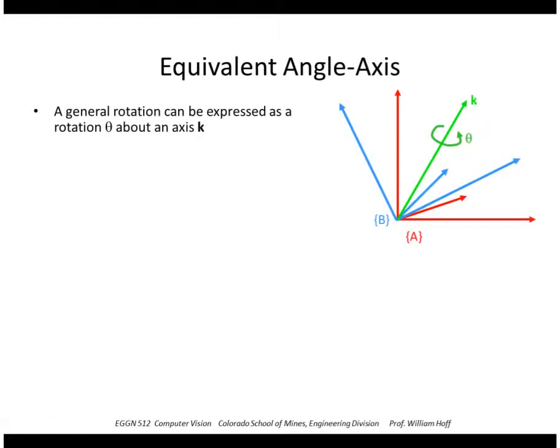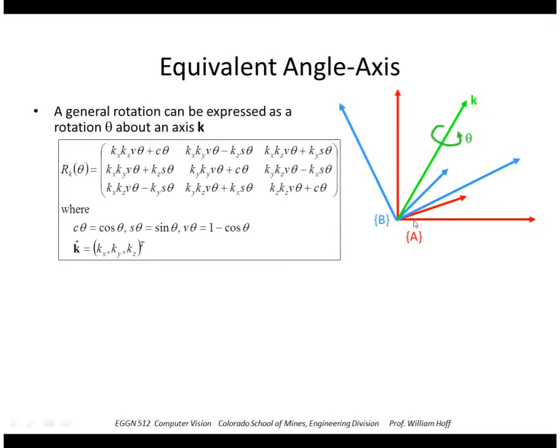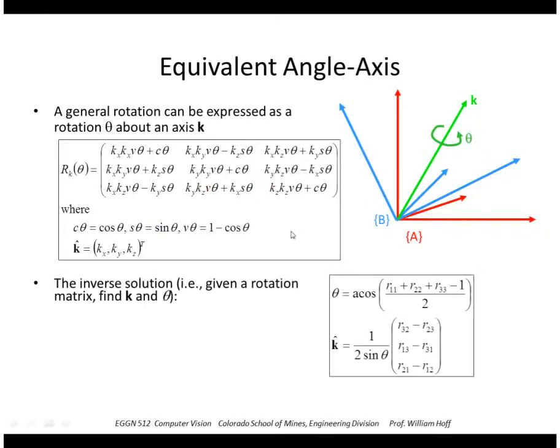So if you recall from a while ago, when we talked about rotation matrices, we can always express a rotation as a rotation about an axis K using an angle theta. And so you can convert from the theta K form to a rotation matrix using this or going the other way. If you have a rotation matrix, you can recover the theta and the axis K.